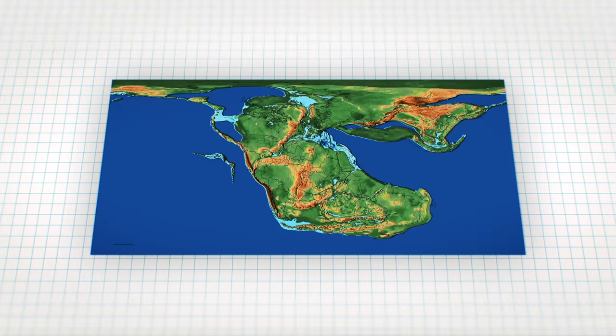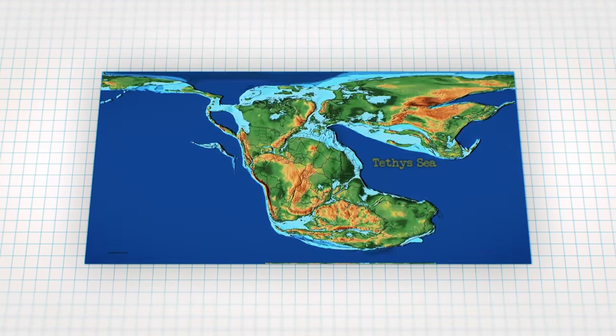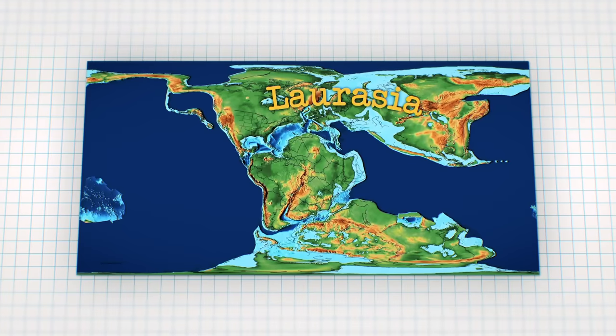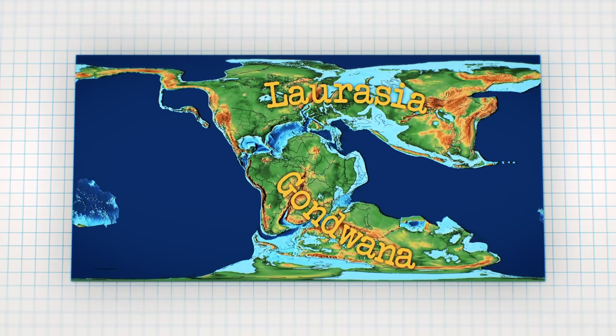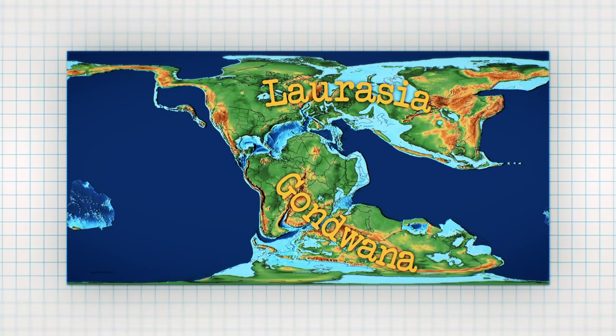This era of interconnectedness came to an end as the Tethys seaway began widening, splitting the supercontinent into two roughly equal landmasses, Laurasia and Gondwana, sending the biota of each new continent off on their own unique evolutionary trajectory.